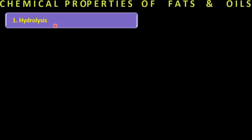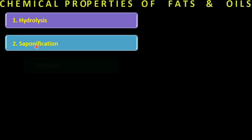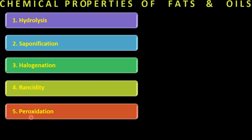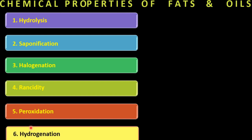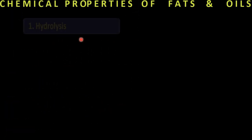Now let's cover the chemical reactions we will study in this lecture. Number one is hydrolysis — how lipids or fats hydrolyze. Number two is saponification. Number three is halogenation. Number four is rancidity of fats. Number five is peroxidation of fats. And hydrogenation is also a very important property, widely used in Pakistan and South East Asia. We will look at all these chemical properties one by one.